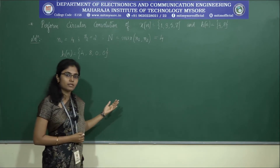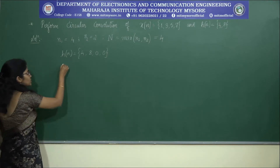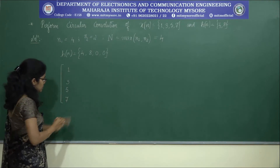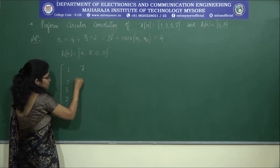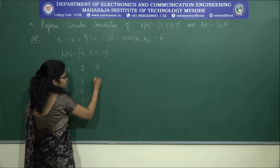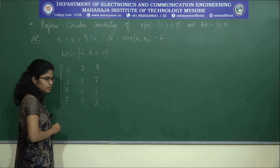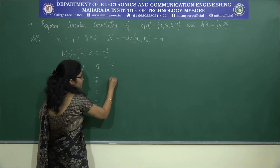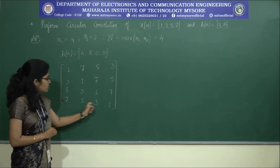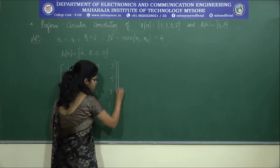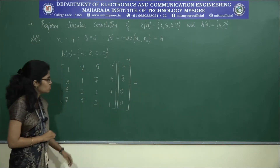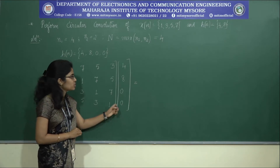I will use the matrix method to find the circular convolution. The first matrix is written from x(n): {1, 3, 5, 7}. For each subsequent column, the last element is written first and the others shift down — giving columns {7,1,3,5}, {5,7,1,3}, and {3,5,7,1}. The second sequence is {4, 8, 0, 0}. The columns of the first matrix match the rows of the second, so we can multiply.